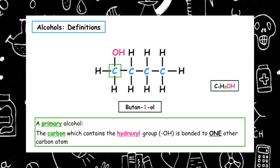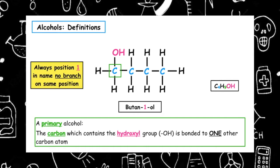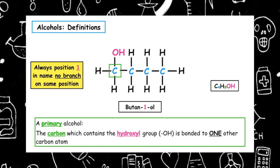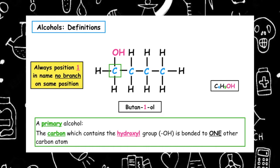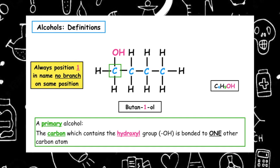To classify an alcohol from its name, we need to know that the hydroxyl group will always be in position one — this can be found within the name — and that there will be no branch on the same position as the hydroxyl group.